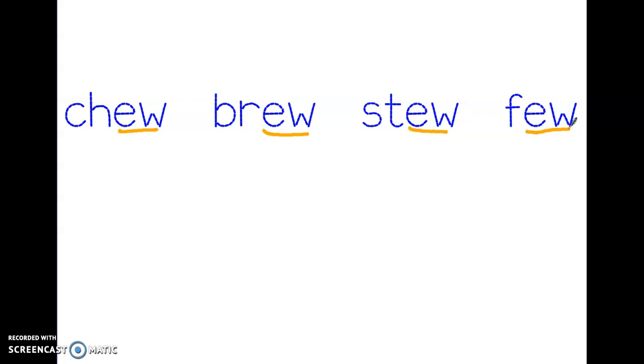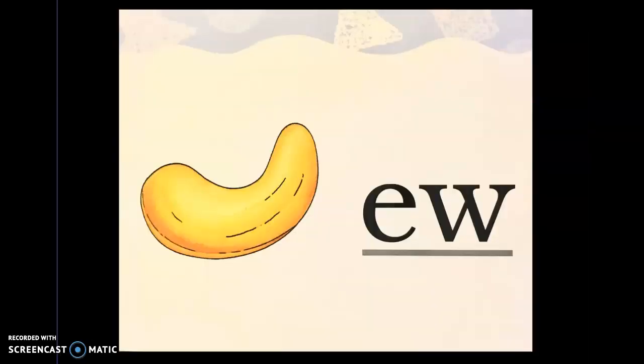How could we finish coding these words? Good job, the only thing that we need to code is ch. When we see this picture, we should think of a cashew. Oo.